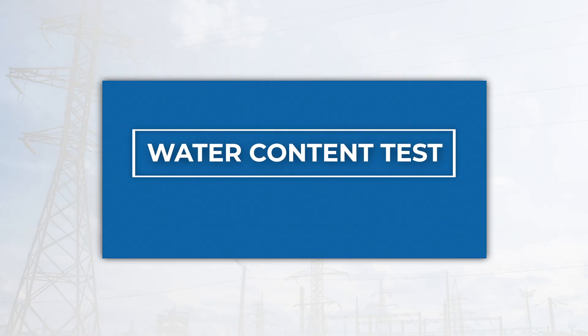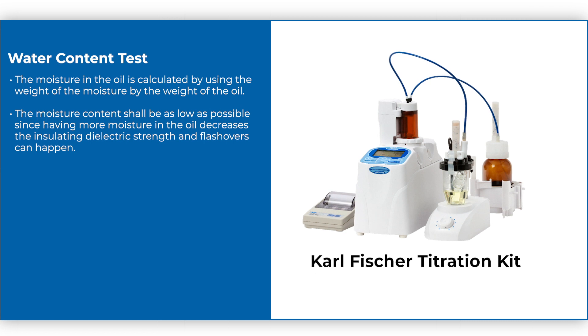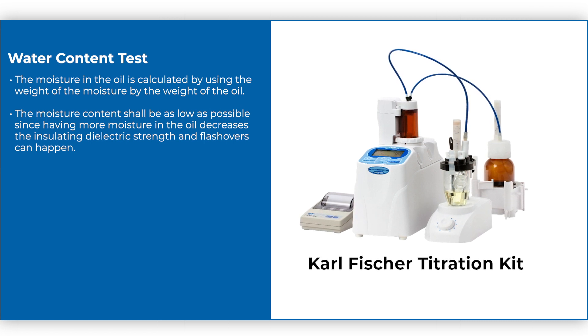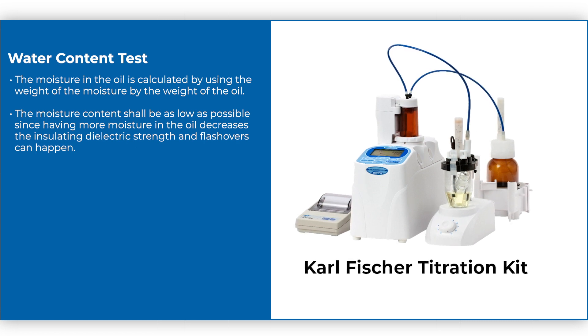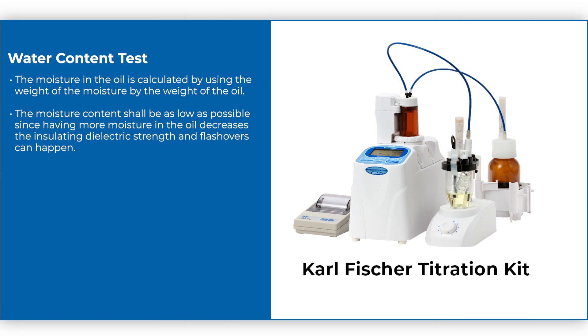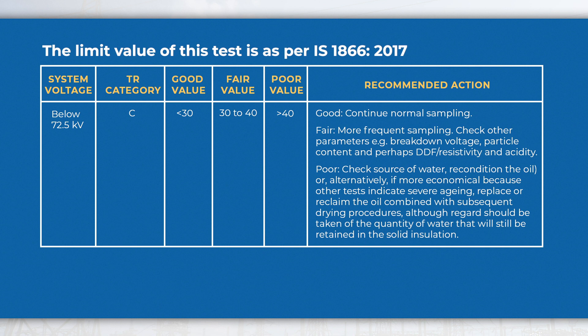Water content test: The moisture in the oil is calculated by using the weight of the moisture by the weight of the oil. The moisture content shall be as low as possible, since having more moisture in the oil decreases the insulating dielectric strength and flashovers can happen. The limit value of this test is as per IS 1866:2017, given in the table.